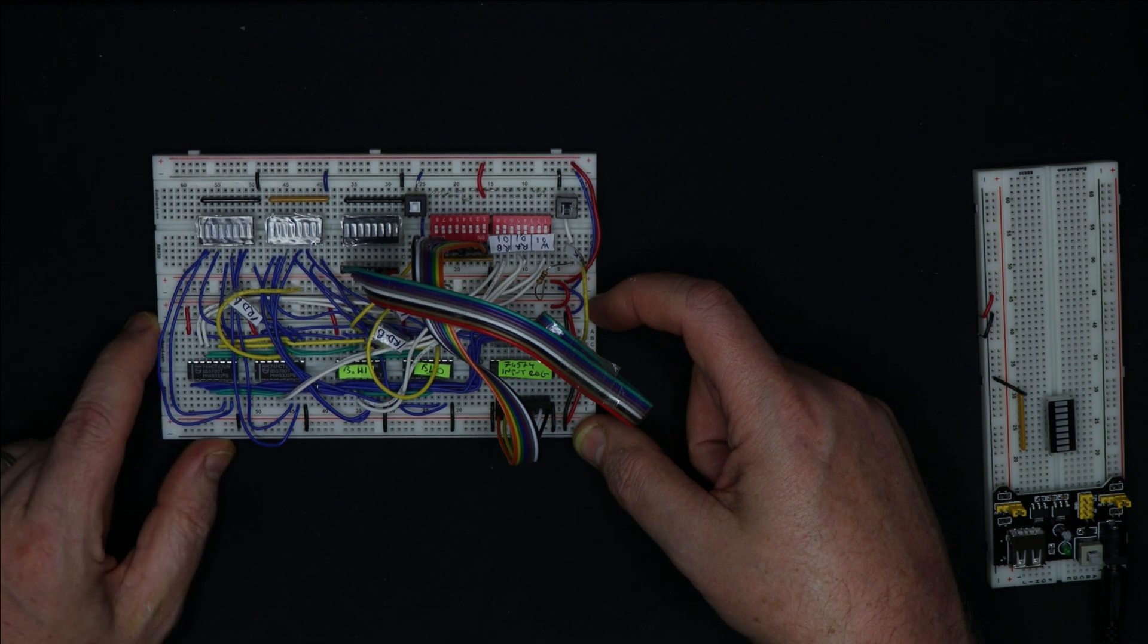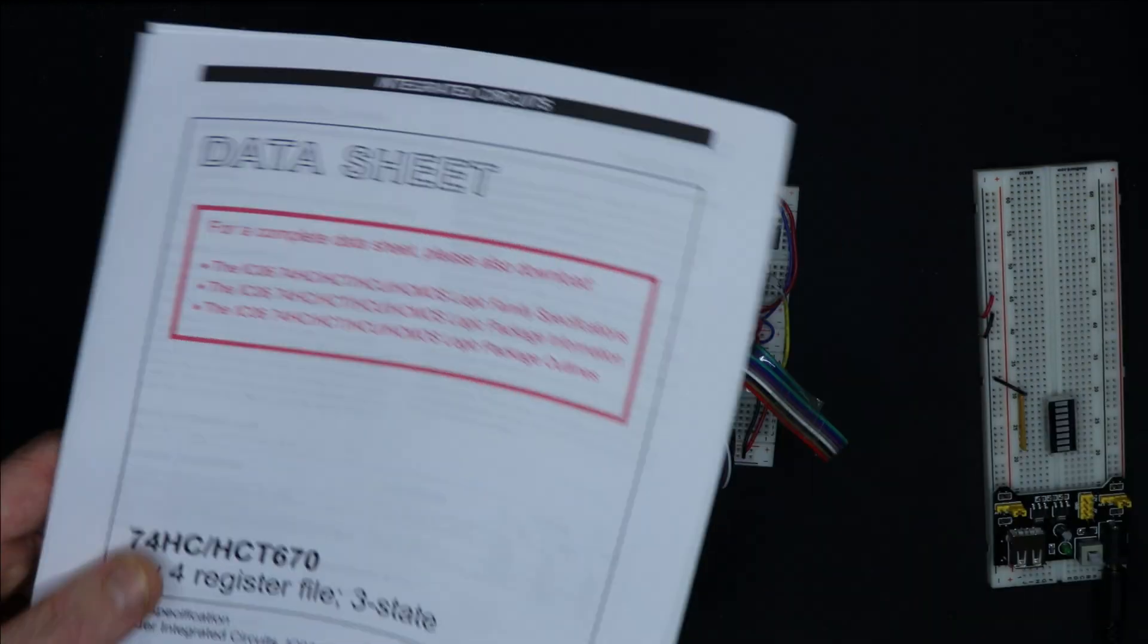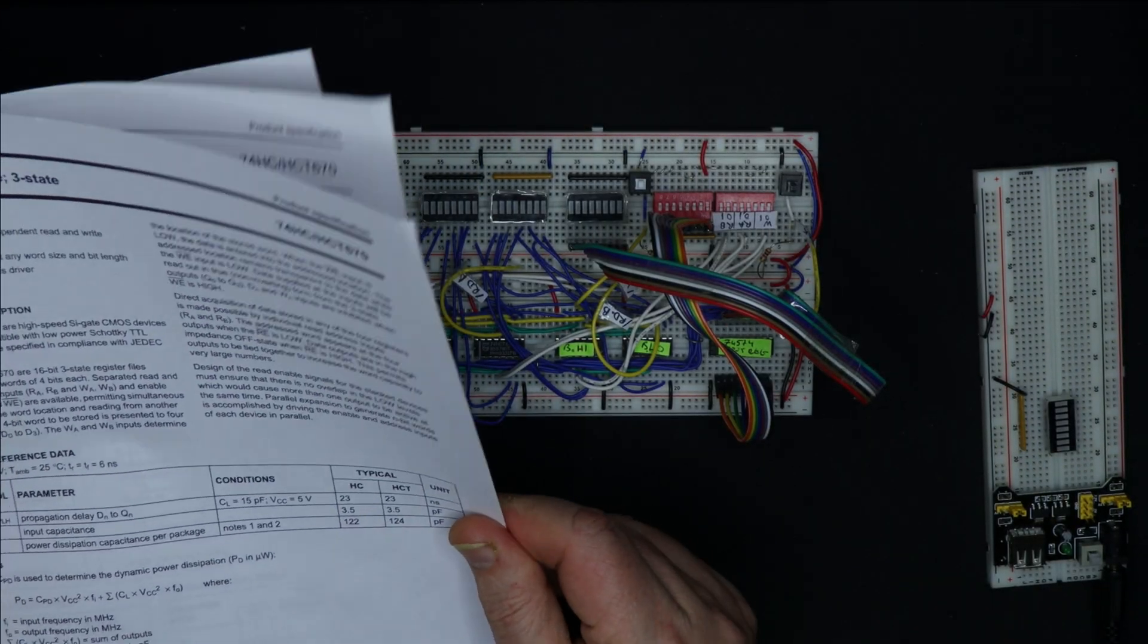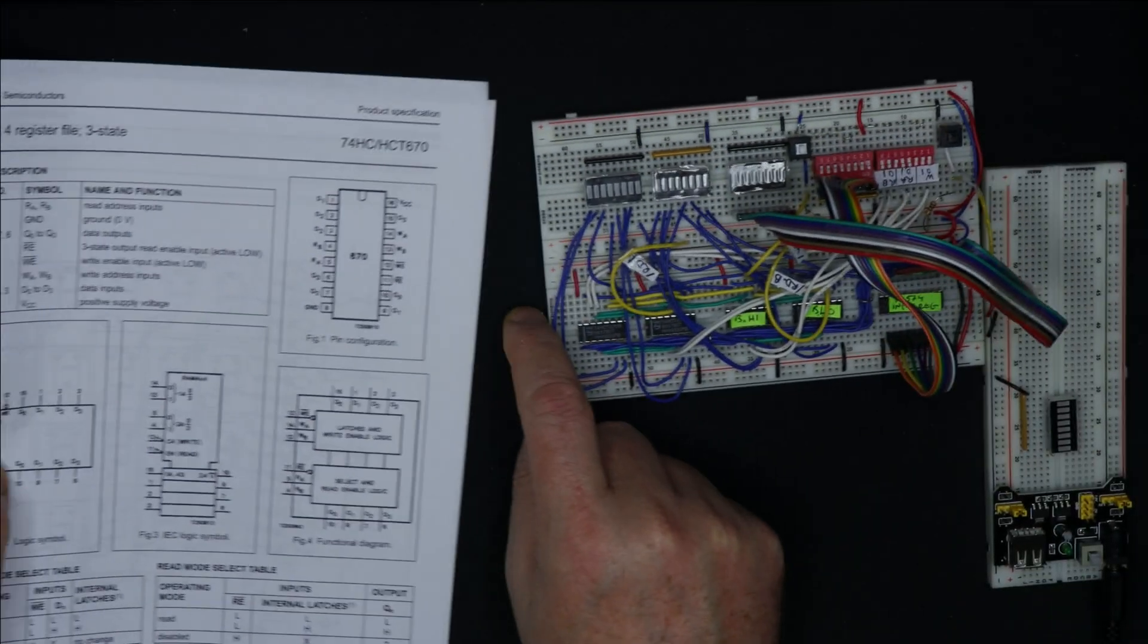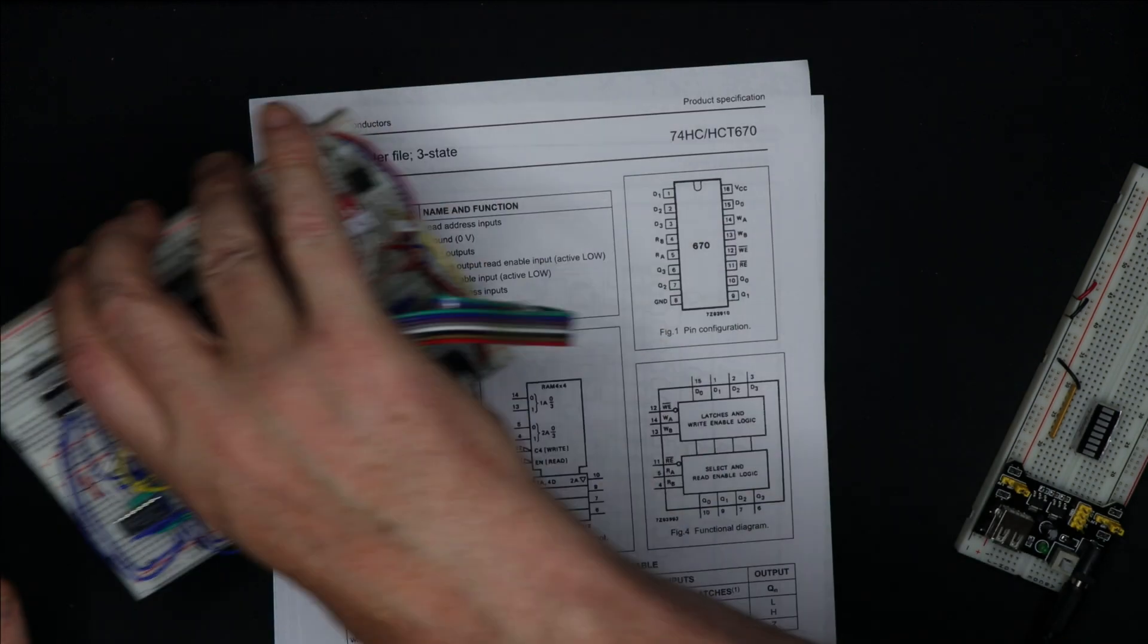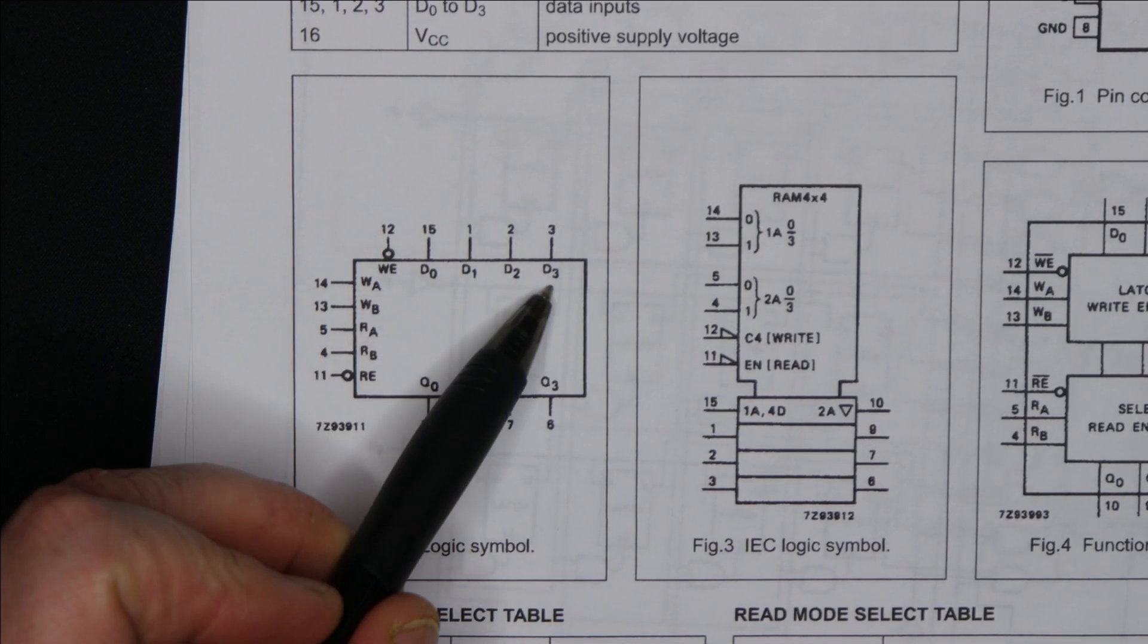It says it's a register file on the datasheet. Let's take a quick look at that. So here's the datasheet. Let me just zoom in on that. Okay, what you can see here is there's four bits in, four bits out.